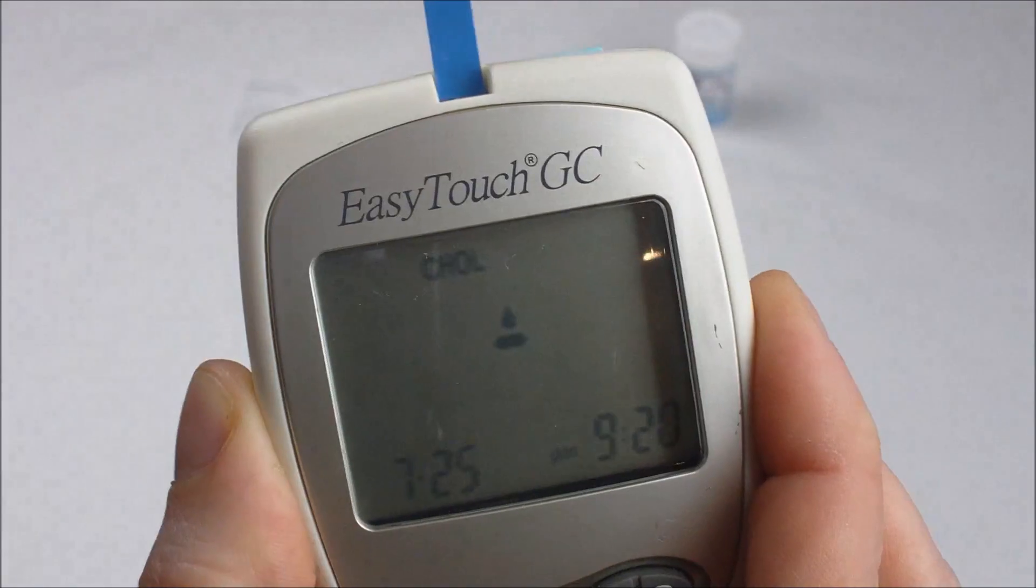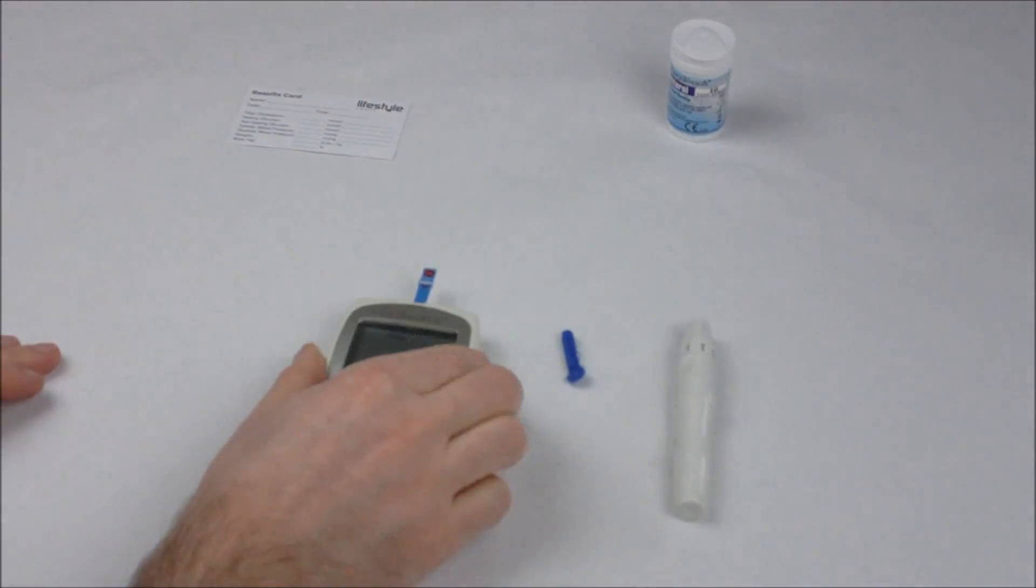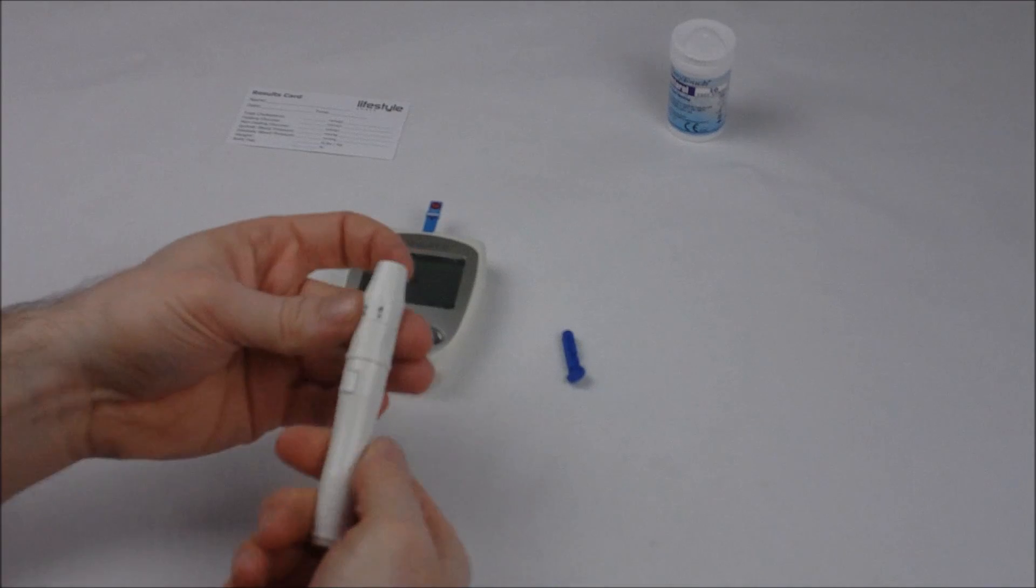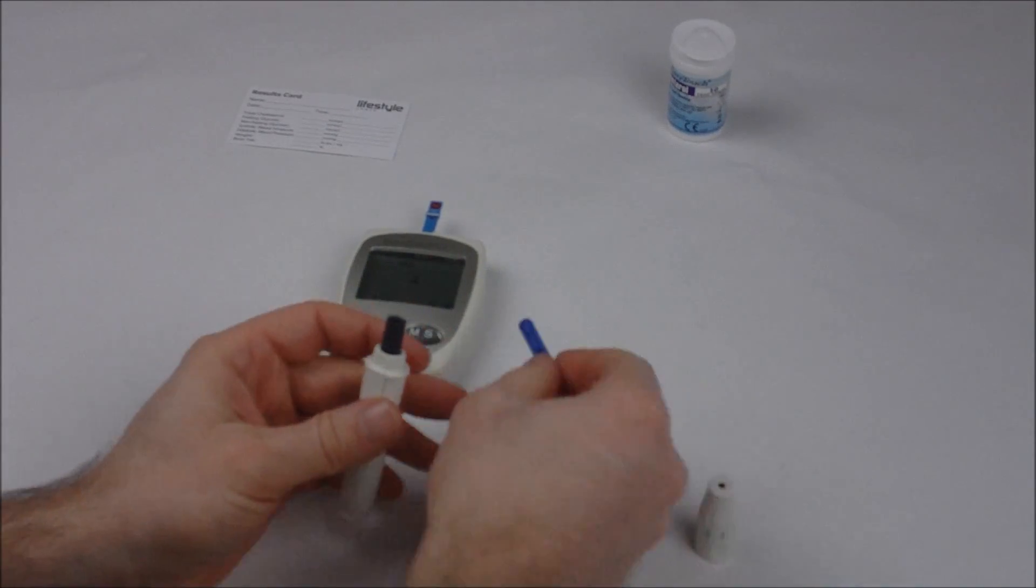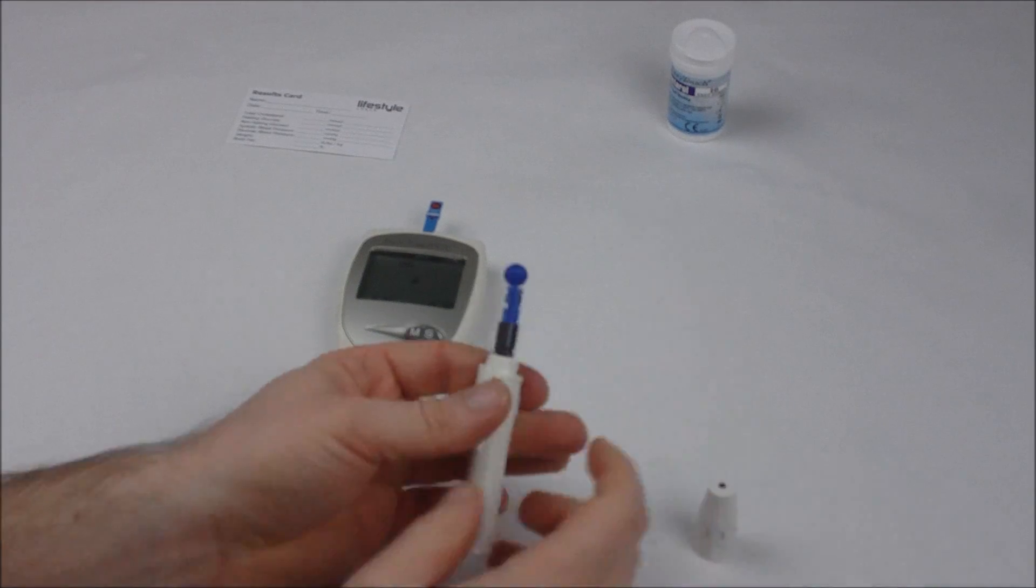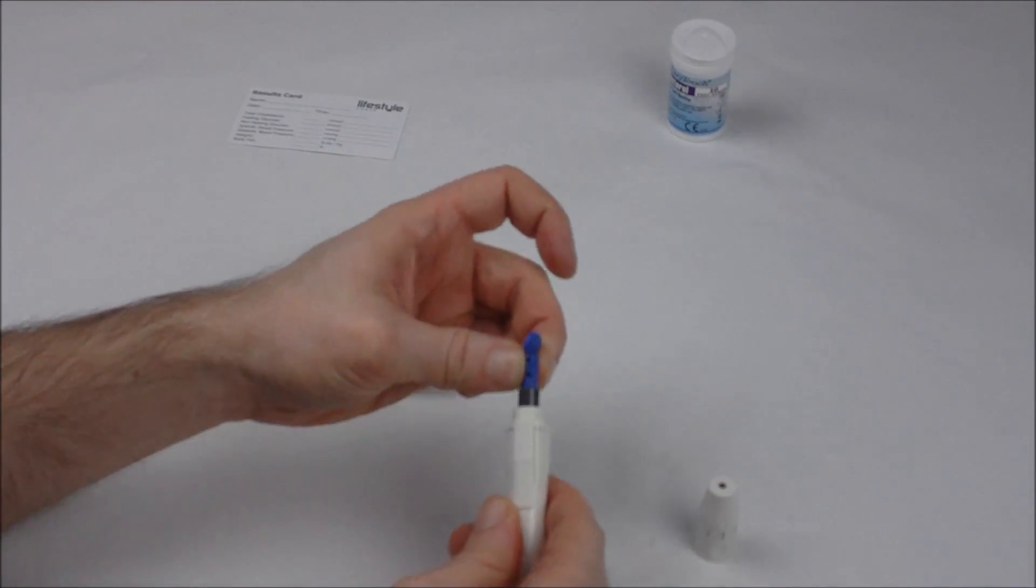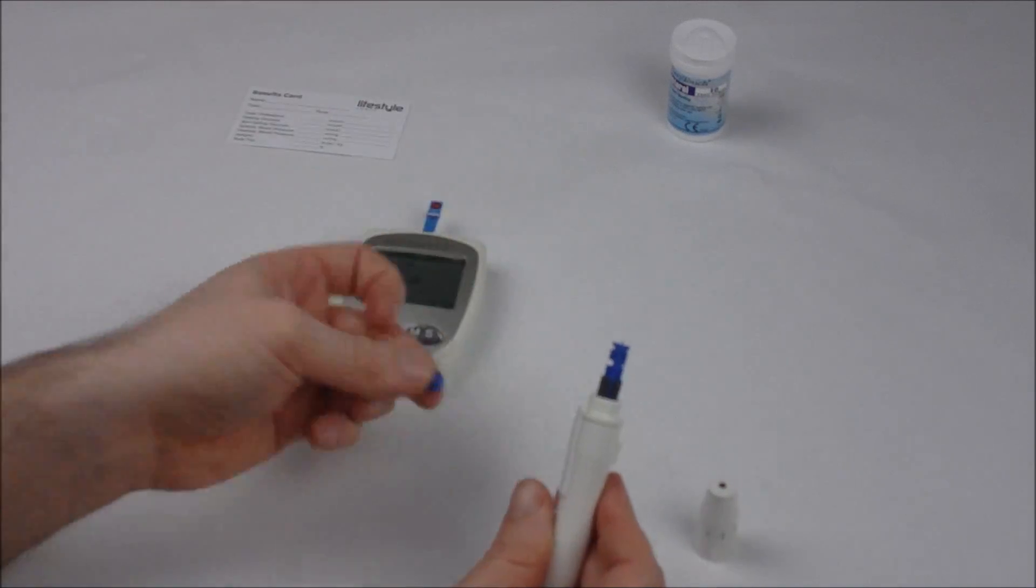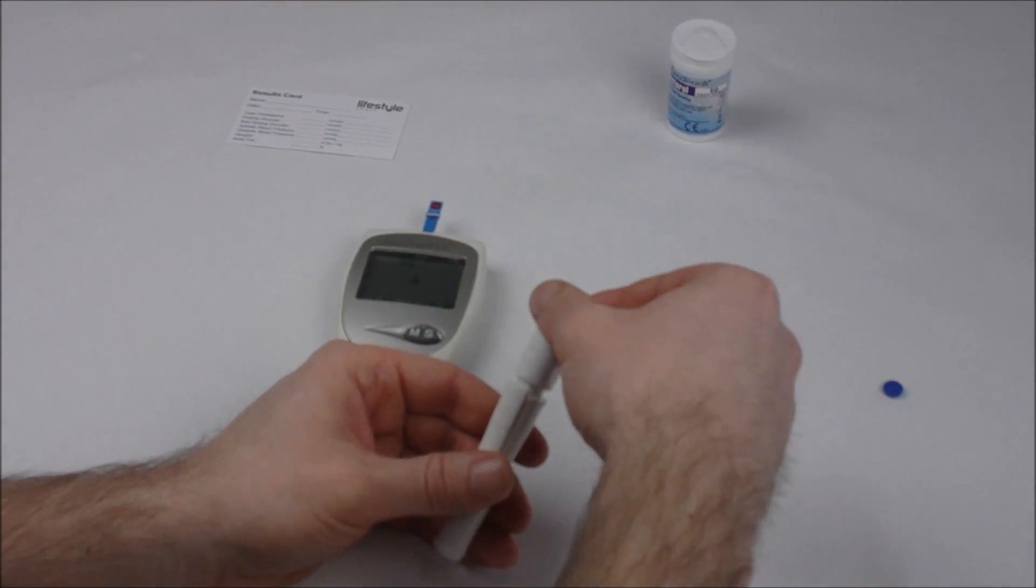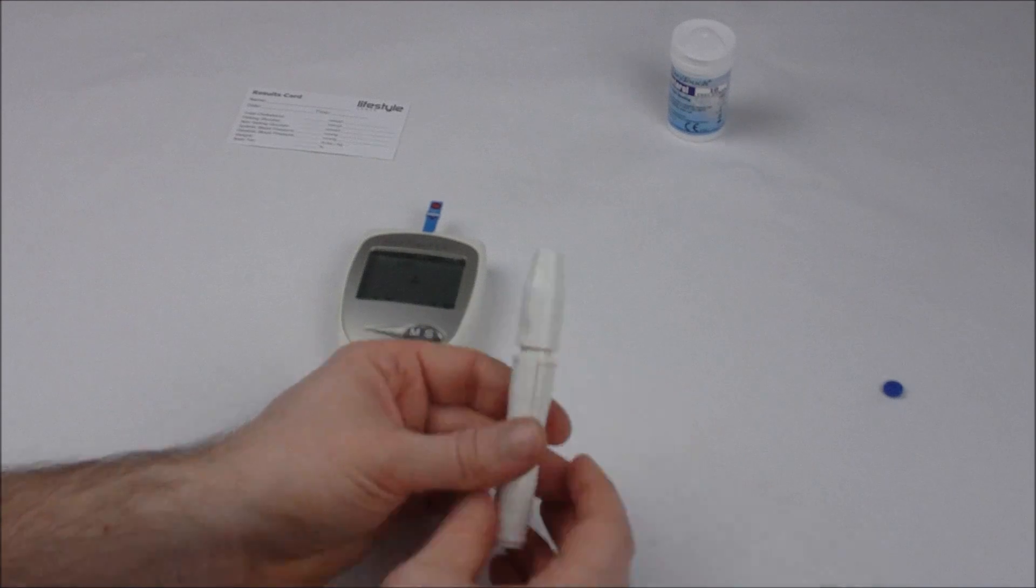When you're at this stage you're ready to go ahead and prick your finger, so make sure you've washed your hands. Unscrew your lancet pen, insert your lancet fully, twist off the cap to expose the needle, and then re-screw on the top.